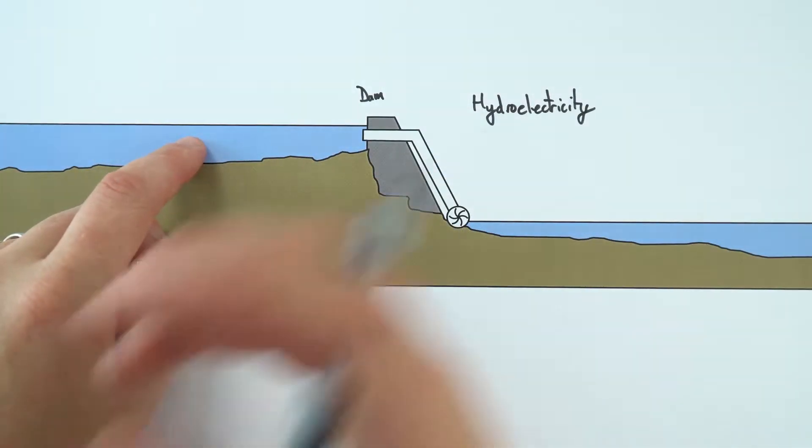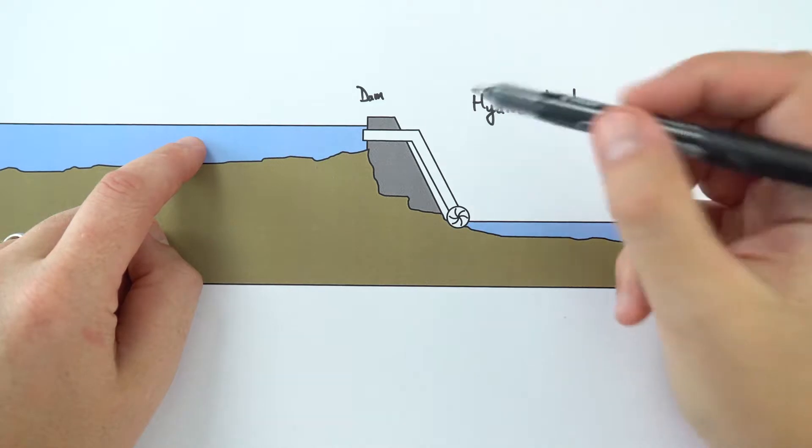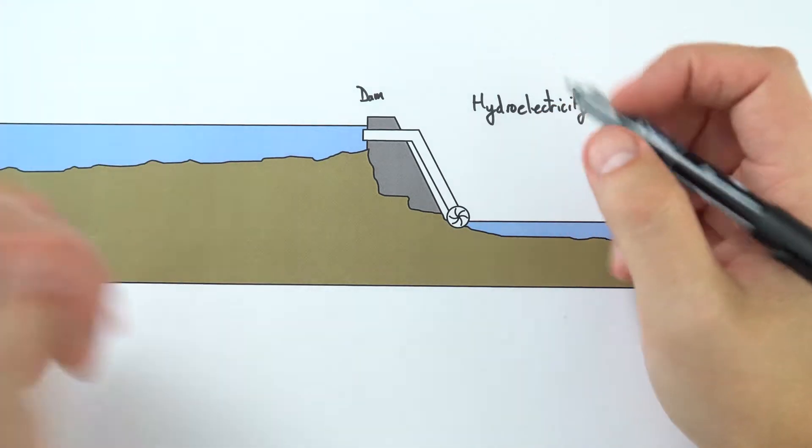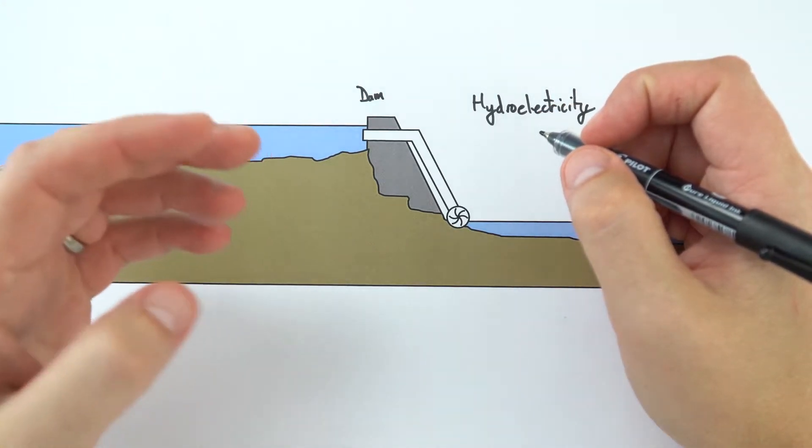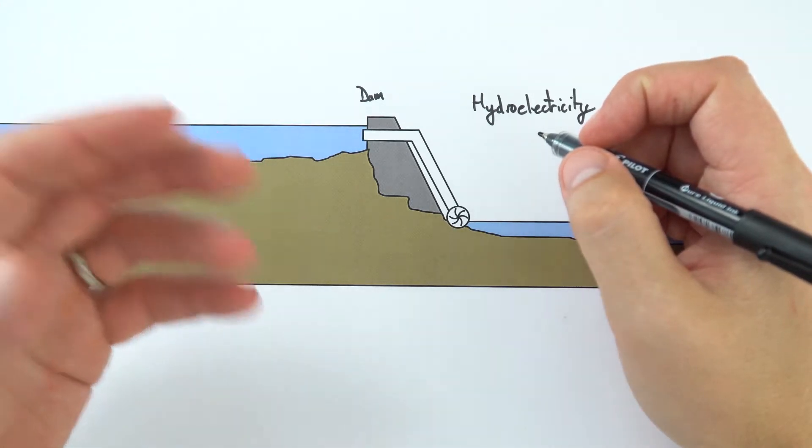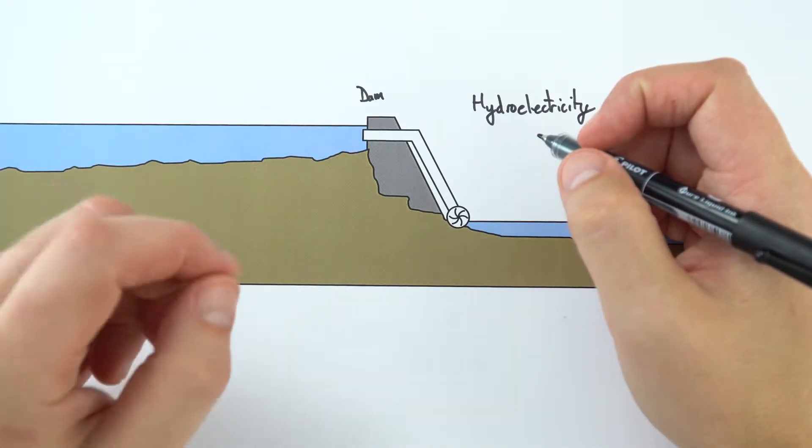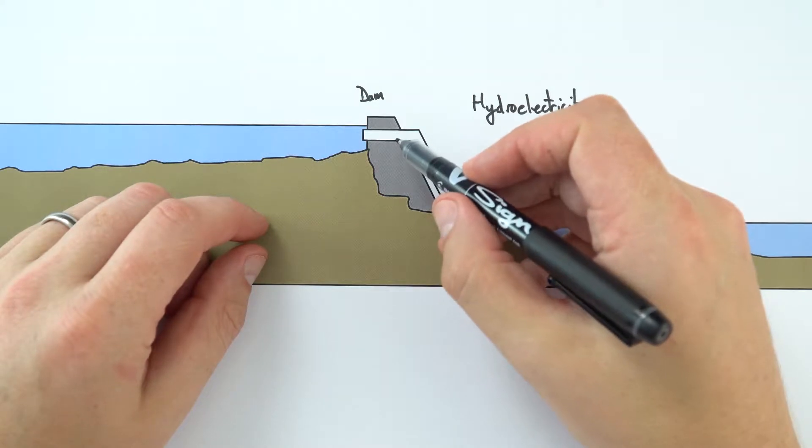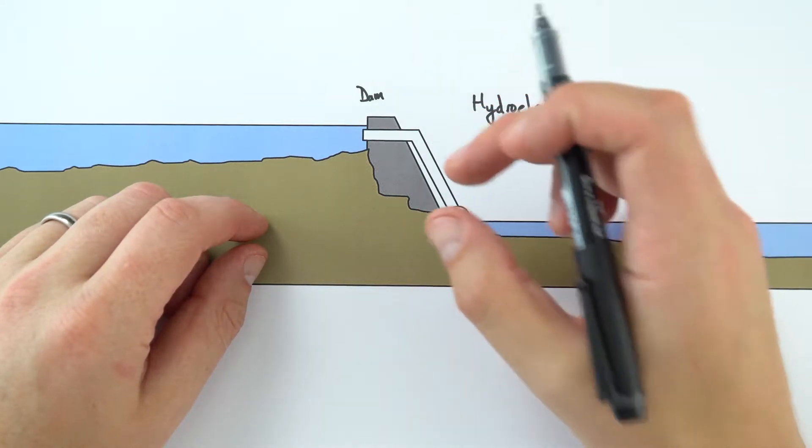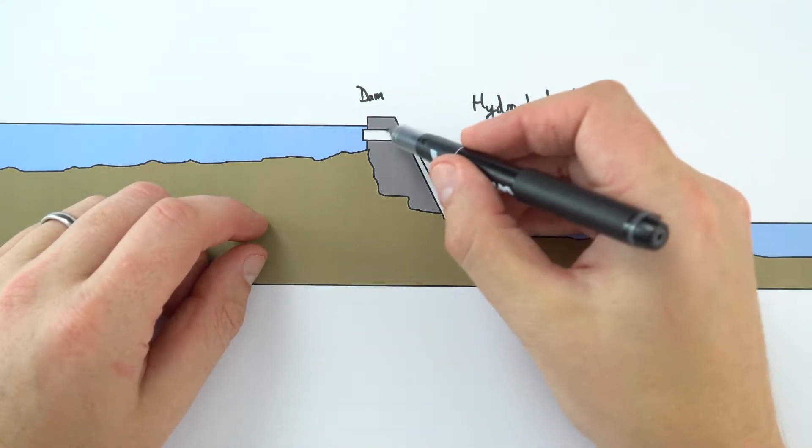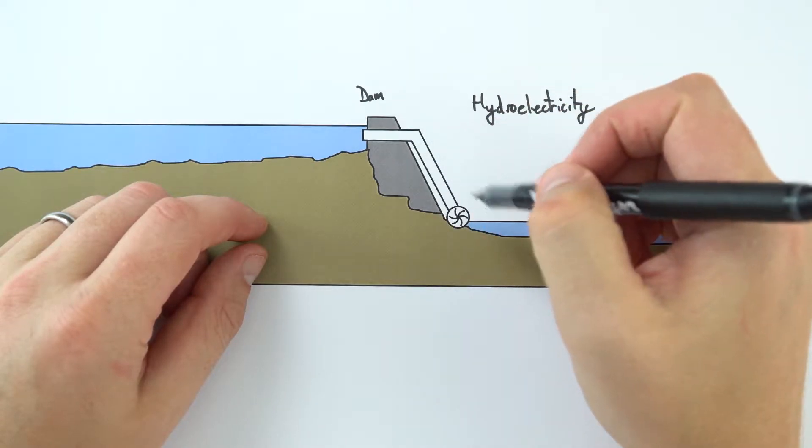So the advantage of this is that it's almost instant electricity. Sometimes with a big power station it takes a long time to get the coal burning to heat up the water to generate the steam. With this, all you need to do if you need a sudden increase in the amount of electricity in the national grid is you basically open a valve, the water flows through, and then you get instant electricity.